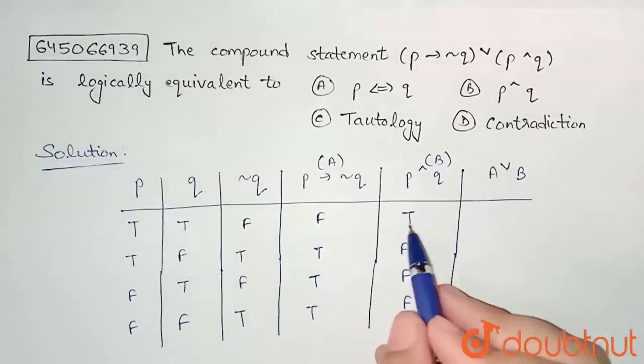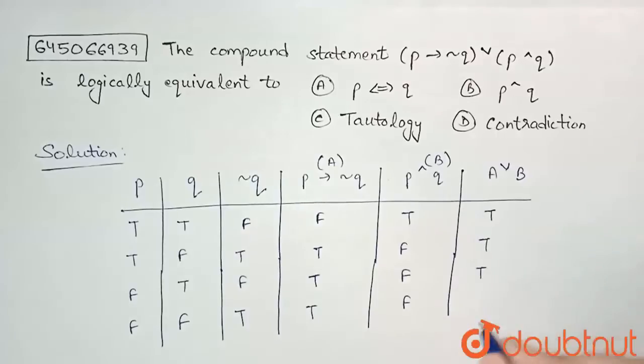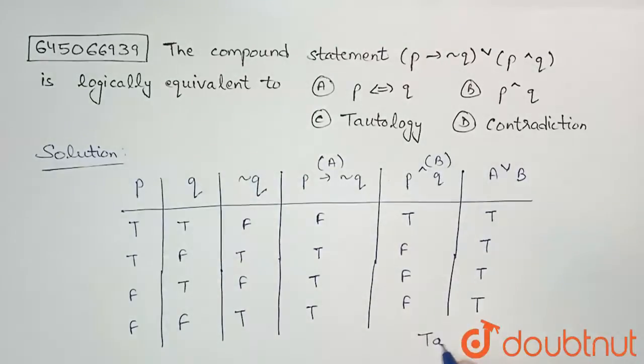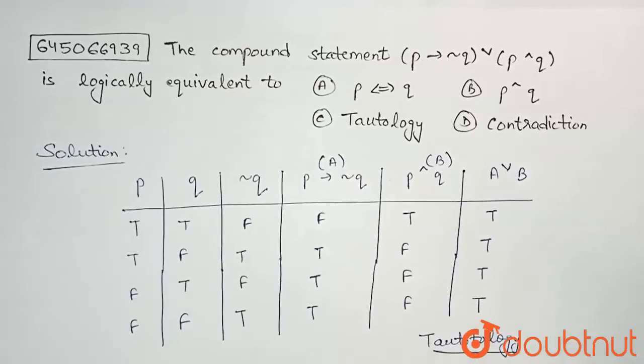Now we need to take the or of these two columns. So false or true is true, this also true, this also true, and this also true. So finally I am getting all true. That means this is my tautology, the expression which is given to me.